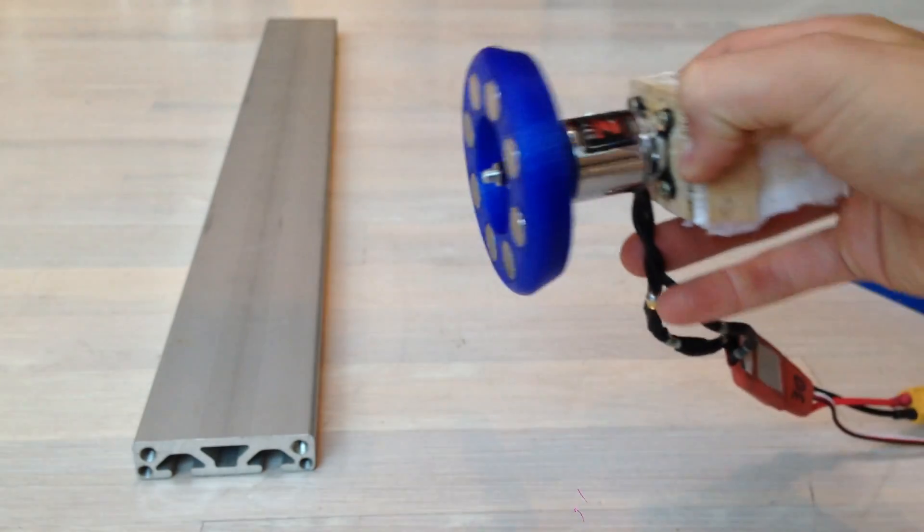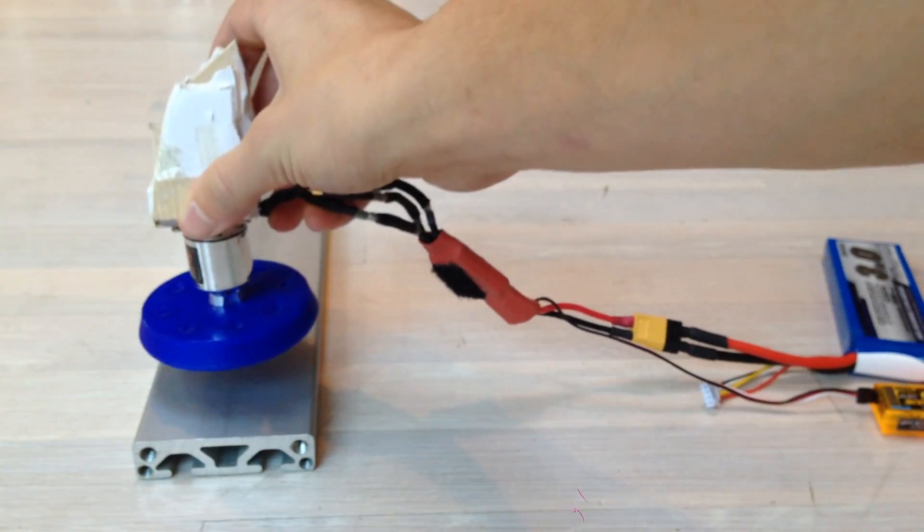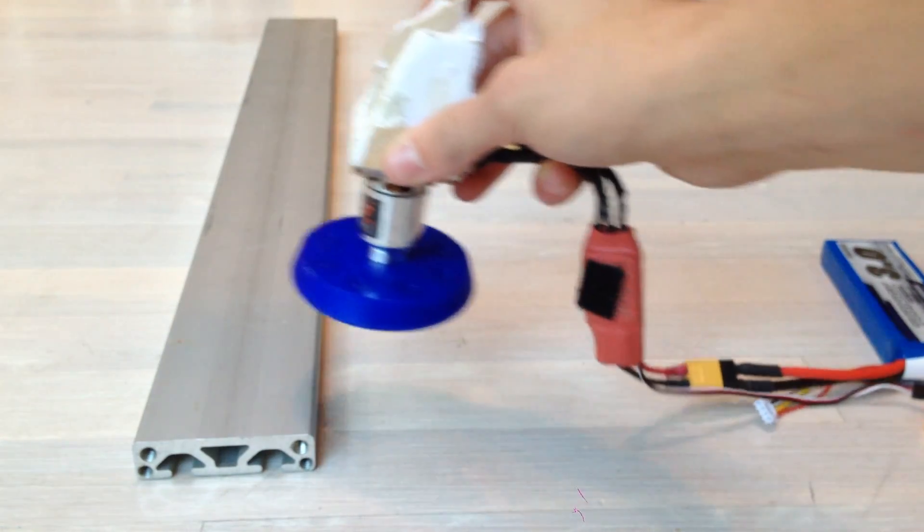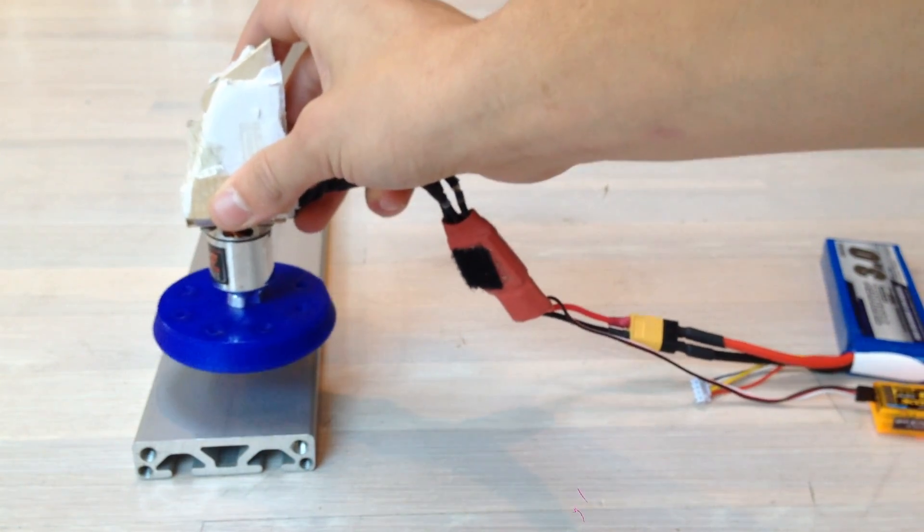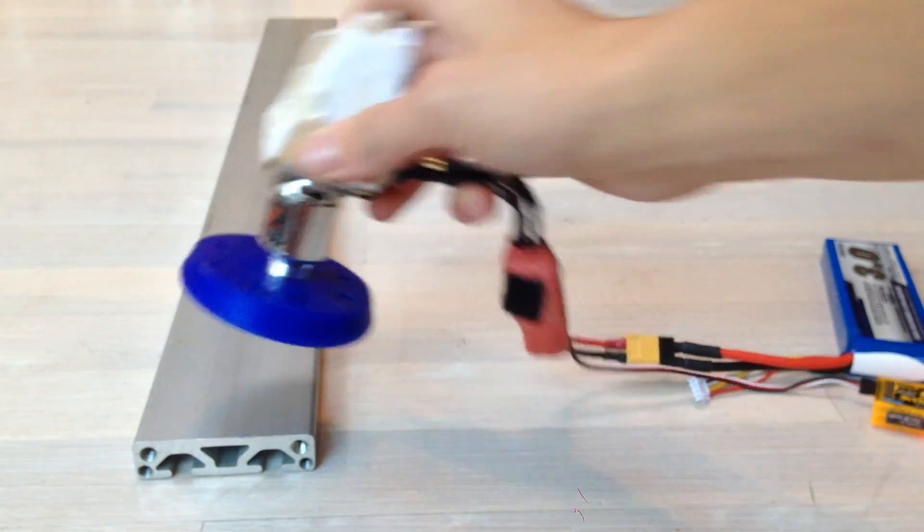This spinning magnet array, when held over my sheet of aluminum right here, is going to generate an eddy current in the aluminum. The eddy current will generate an opposing magnetic field and repel the magnets.